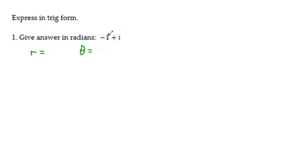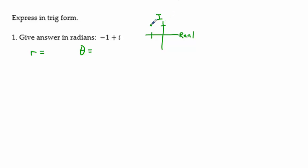To get r and theta, we need to think about where this point lies in our complex plane — the real axis and the imaginary axis. Negative 1 plus i means go left 1 and up 1. We don't keep the i; we just look at the number in front. So right here is negative 1 plus 1i. We can make a nice triangle out of that and do the things we've been doing in trig for months.